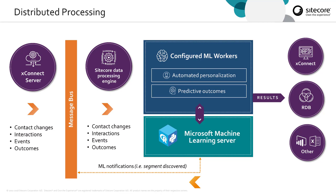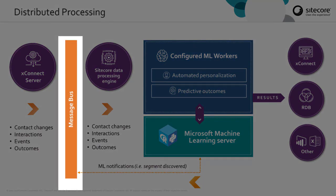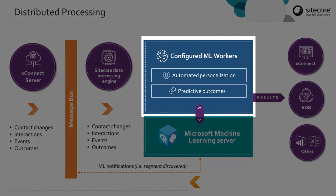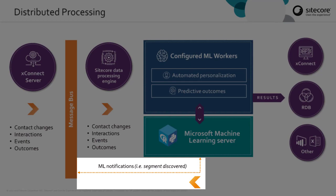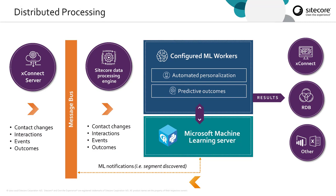What does distributed processing look like in the Sitecore Cortex engine? It starts off with data coming in through XConnect or some other source. Then XConnect or some other system can raise an event through the message bus to kick off the processing. At this point, the processing engine starts managing the coordination — taking the data and getting the workers kicked off. As it goes along, it also manages the communications with the machine learning server. Finally, events get raised around the status and results of all those workers that have been running, and those results get sent out for storage or consumption depending on the output you want. For example, you might want to update an XDB contact with the result of a predictive outcome algorithm.